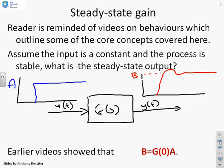You'll have covered before that the relationship is this: B equals G of 0 times A. So I take the transfer function G of S and I simply substitute S equals 0. So the question now is, can I get MATLAB to do this for me?